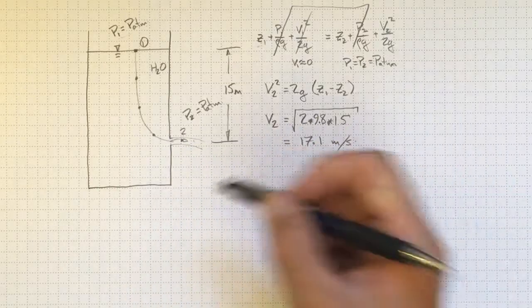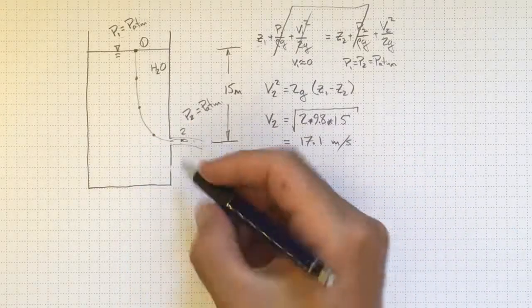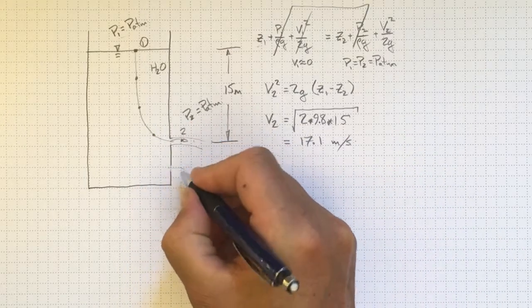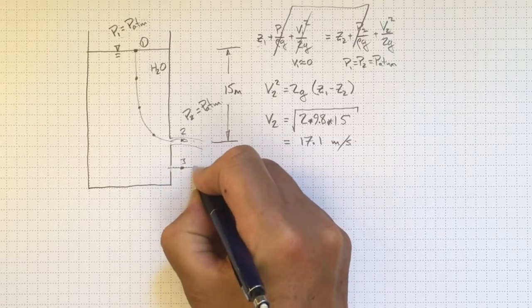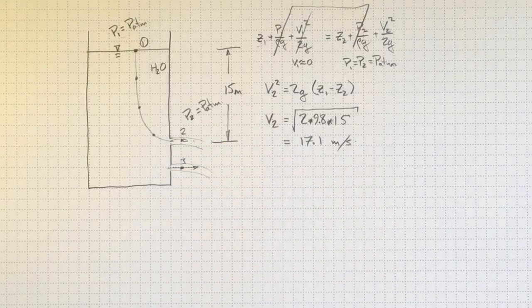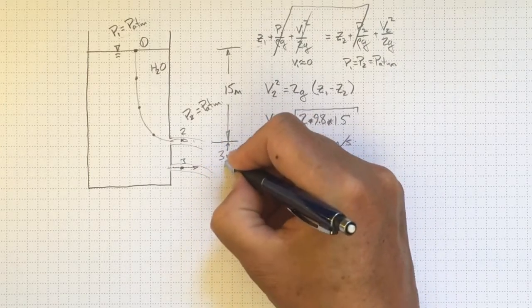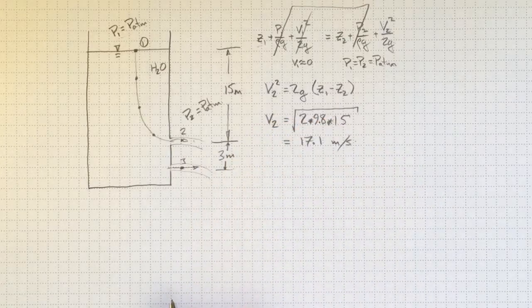Now suppose we also had another hole in the tank further down here. This is location three and water is pouring out of here. You've also got a jet coming out and it's falling due to gravity. And this location is another three meters lower than the previous location.